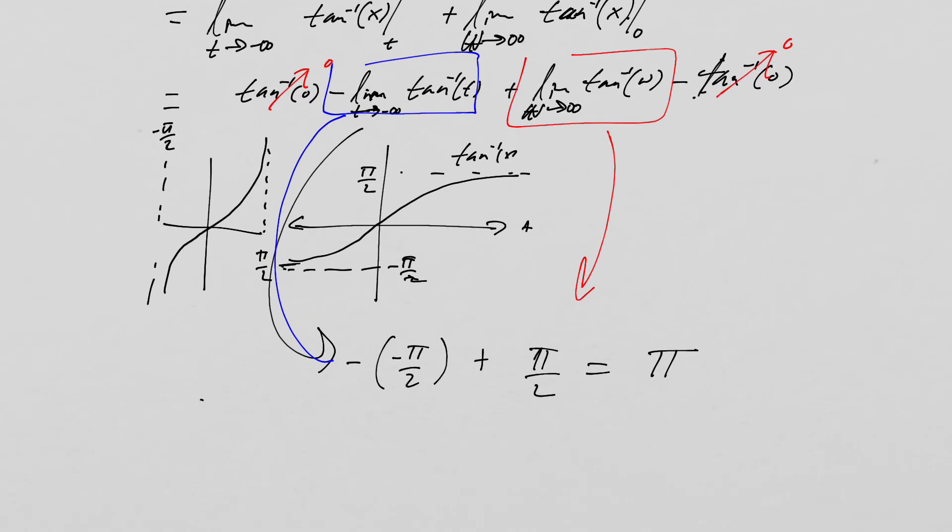Alright, so what we just proved then is the integral of the Witch of Maria Agnesi. The integral of the curve of the Witch of Maria Agnesi, I don't know what you want to call it, is actually equal to pi.